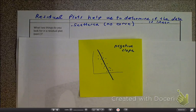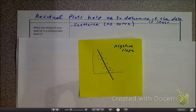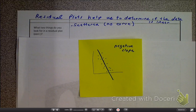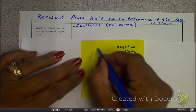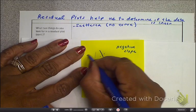This is nothing but data, and you've got the scatter plot. Now I want to show you the relationship between a scatter plot and a residual plot.